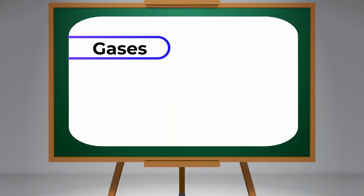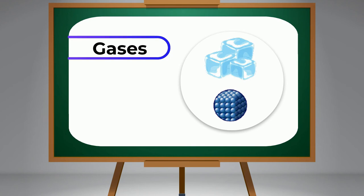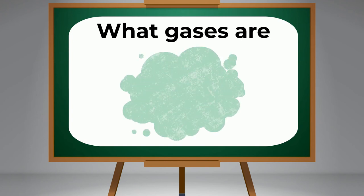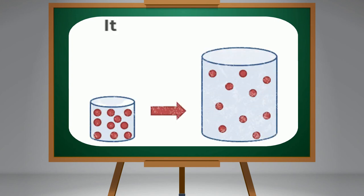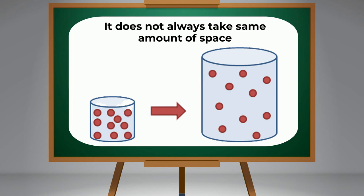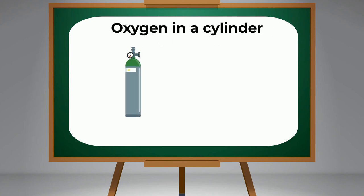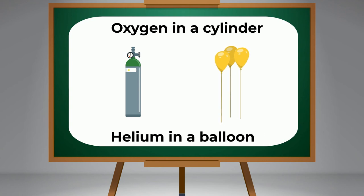Gases: Now let's see what gases are. Gas does not have a fixed mass and its shape is also not definite. It means that it does not always take same amount of space and its shape also changes according to the container it is in, for example, oxygen in a cylinder or helium in a balloon.